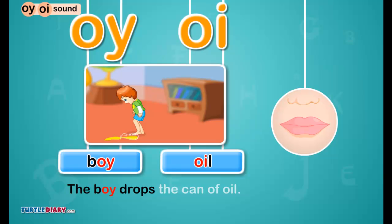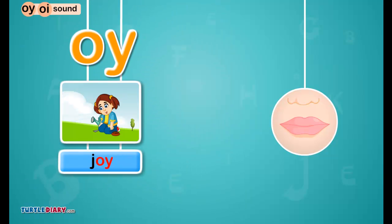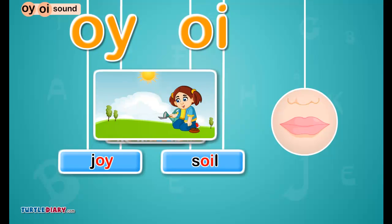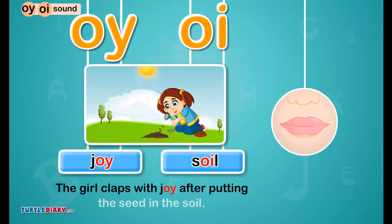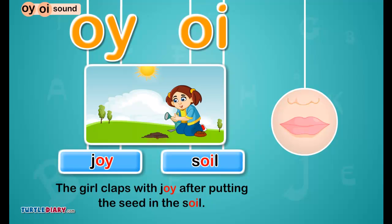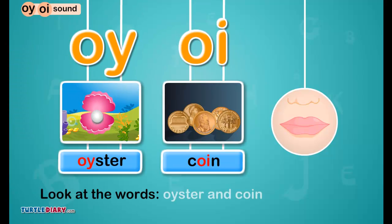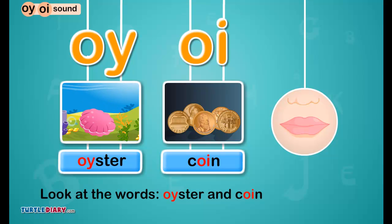The boy drops the can of oil. O-Y in joy and O-I in soil sound oi. The girl claps with joy after putting the seed in the soil. O-Y in oyster and O-I in coin make the oi sound.